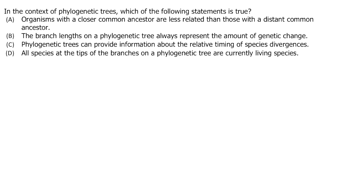Our next question reads: in the context of phylogenetic trees, which of the following statements is true? A reads: organisms with a closer common ancestor are less related than those with a distant common ancestor. That isn't true, because organisms with a closer common ancestor are more closely related than those with a distant ancestor. So A is definitely not right. B says the branch lengths on a phylogenetic tree always represent the amount of genetic change. Branch lengths can indicate genetic change — a longer branch means more genetic change — but that's not always the case. Because it says 'always,' that doesn't sound like the best answer.